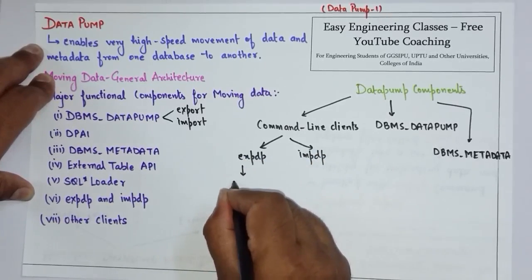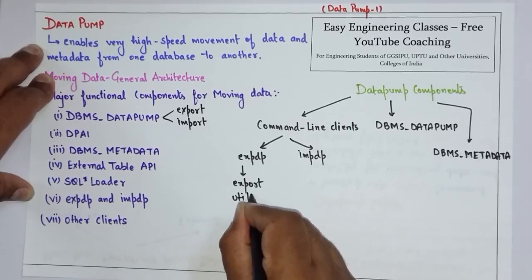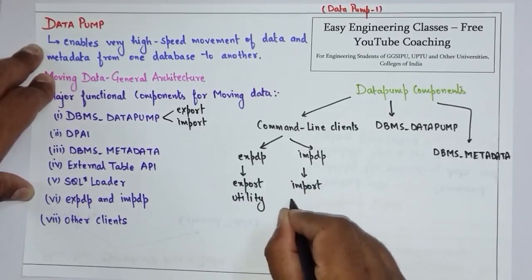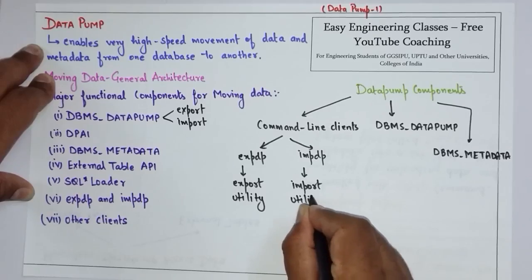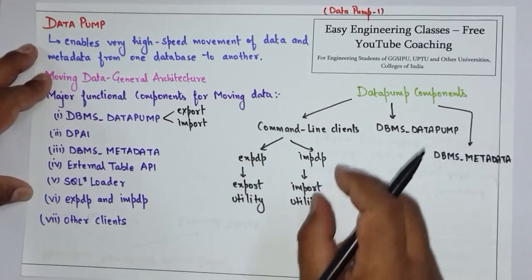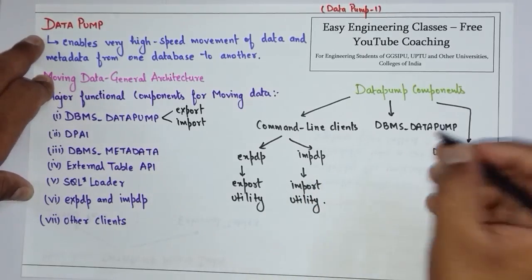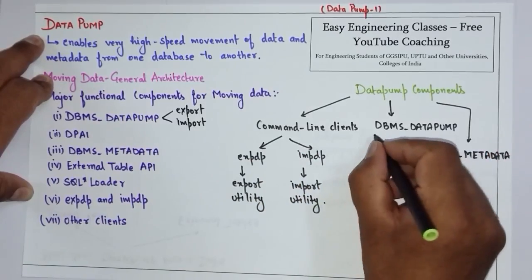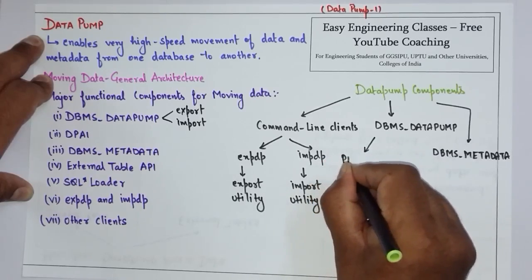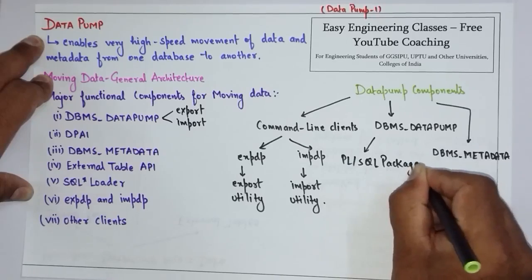expdp is for the export utility and impdp is for the import utility. So if we want to export data we use expdp, and to import that exported data we use impdp. DBMS_DATAPUMP is actually a PL/SQL package — it is the API that supports export and import utilities.